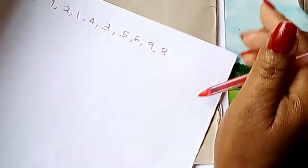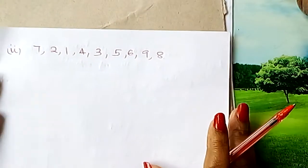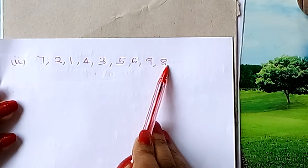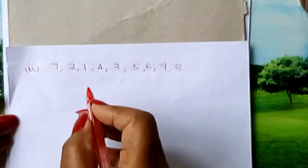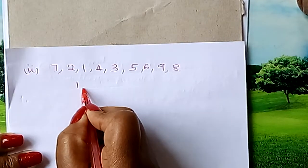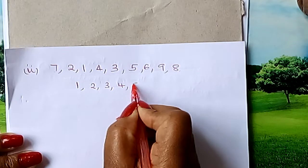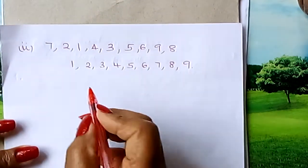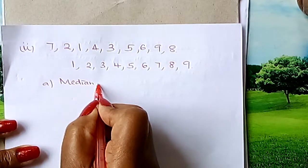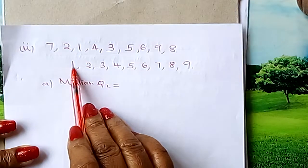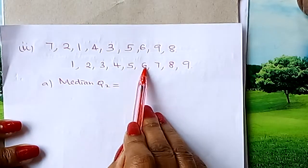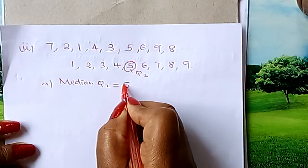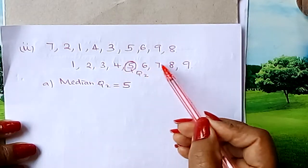Let us look at another set of data. We have the numbers 1, 2, 3, 4, 5, 6, 7, 8, 9 — there are now 9 numbers. The first thing is to arrange them in ascending order: 1, 2, 3, 4, 5, 6, 7, 8, 9. What is our median Q2? Counting from both sides, our median falls on the fifth term. So our Q2, the median, is 5. You have 4 numbers on each side.